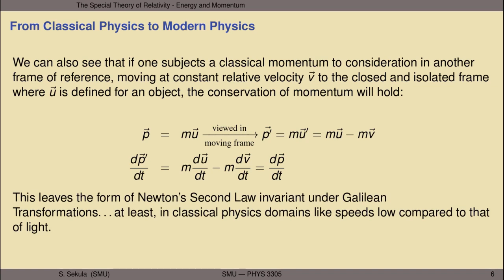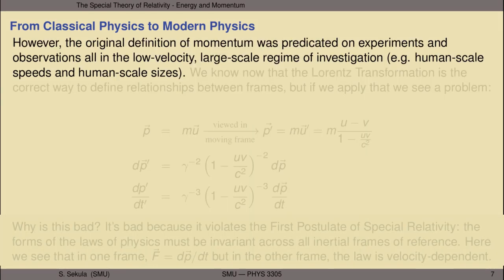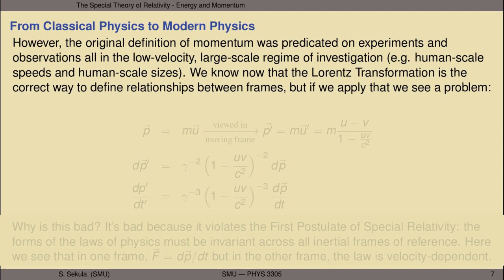We know the original definition of momentum was based on experiments done in the low-velocity, large-scale regime. We also know the Lorentz transformation — not the Galilean transformation — gives the correct way to define relationships between frames. So let's take the classical definition of momentum and apply the Lorentz transformation. When we do this, the momentum equals mass times velocity, and viewing it in the moving frame, we insert the relativistic velocity transformation: mass times (u minus v) over the quantity (1 minus uv/c²).